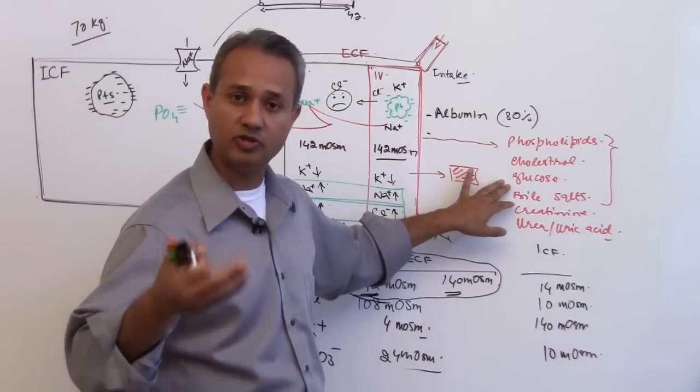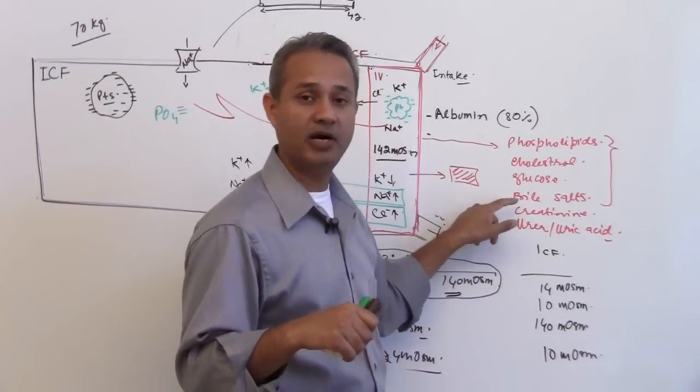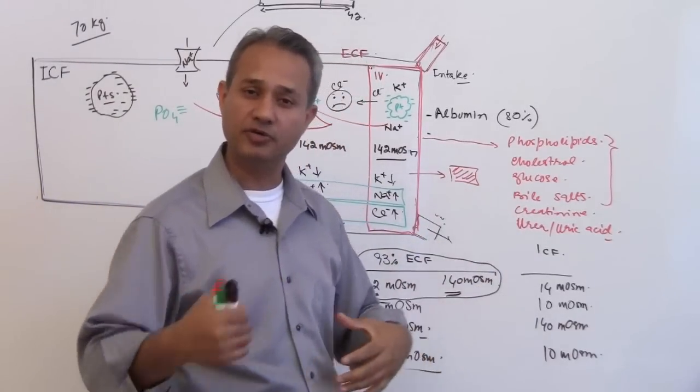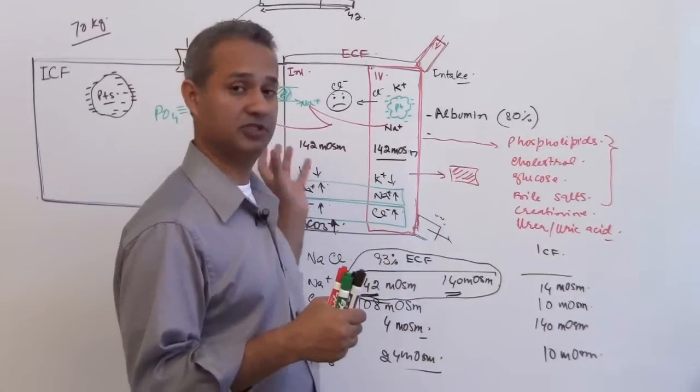Then glucose is a major amount - you know that, about 80 to 200 milligrams per deciliter. Then we have bile salts, creatinine, urea, uric acids, and stuff like that. So these are the compositions here.